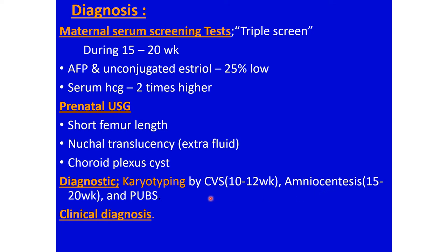At the time of birth, if Down syndrome is suspected, a blood sample can be taken via percutaneous umbilical blood sampling for karyotyping. Clinical diagnosis is also done based on the typical physical features discussed.